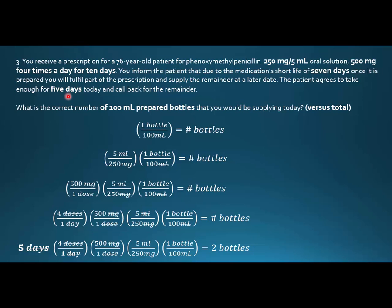Then I run into trouble, because there are three options — 10 days, 7 days, and 5 days — and I'd need to know which is right. So now I might read the question slowly and carefully after I've set it up. The question reads: you receive a prescription for a 76-year-old patient for phenoxymethylpenicillin 250 mg per 5 ml oral solution, 500 mg four times a day for 10 days. You inform the patient that due to the medication's short shelf life of seven days once prepared, you will fulfill part of the prescription and supply the remainder later. The patient agrees to take enough for five days today and will call back for the remainder.